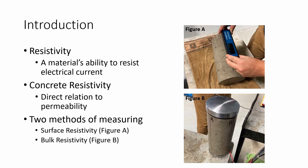The other method is bulk resistivity. This will not be covered in detail, but it should be noted as another way to measure resistivity. This method uses two metallic plates which are hooked up to an electrical source, which then an electrical current is driven through the sample. Measurements are recorded and then converted to resistivity.